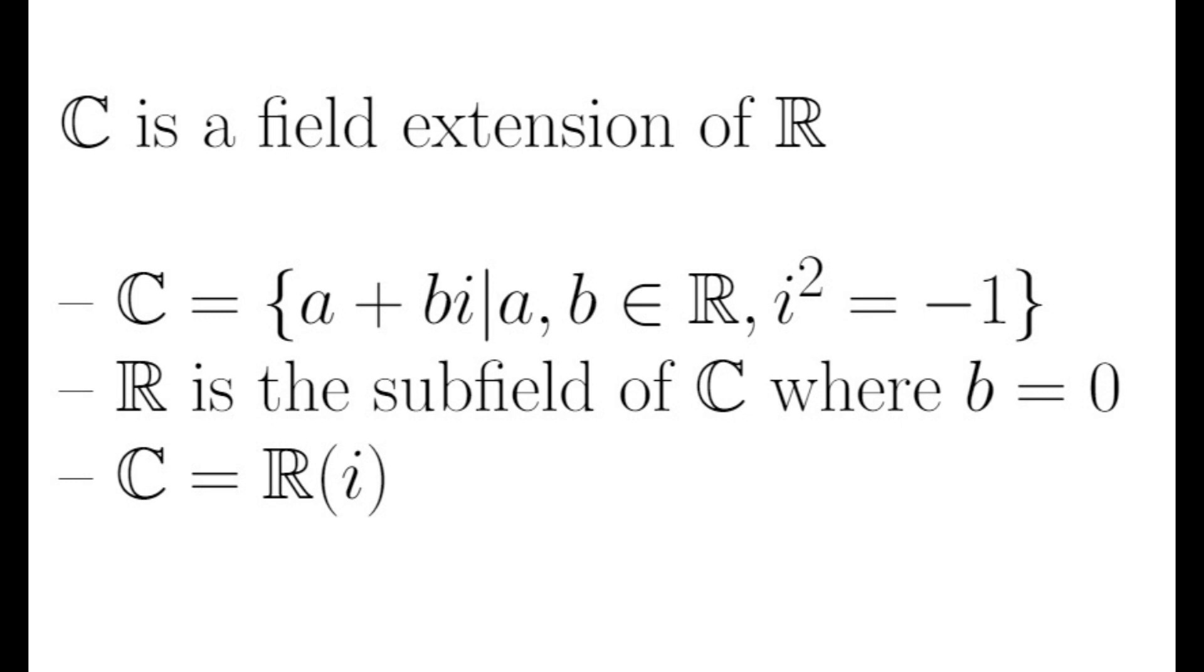Example: let's look at two fields we've already seen, C the complex numbers and R the real numbers. C are all numbers of the form a plus bi, where a and b are real and i squared is negative one. We can see that R sits inside C by letting b be equal to zero. If b is zero, we just have the real numbers.